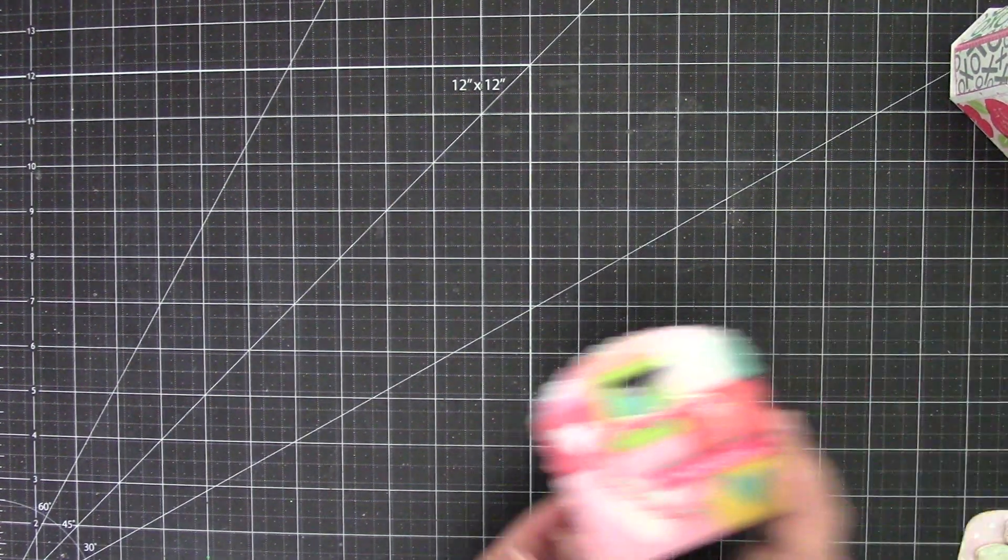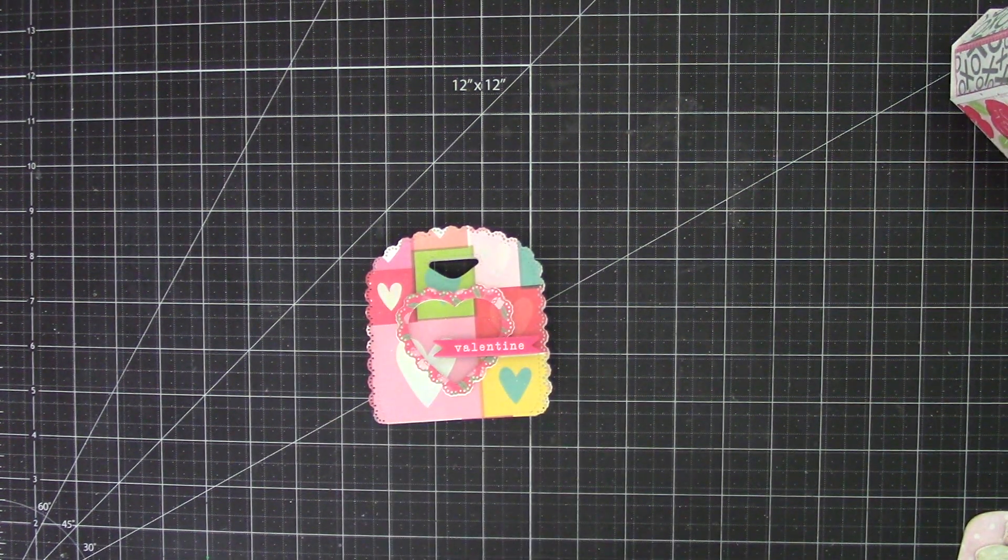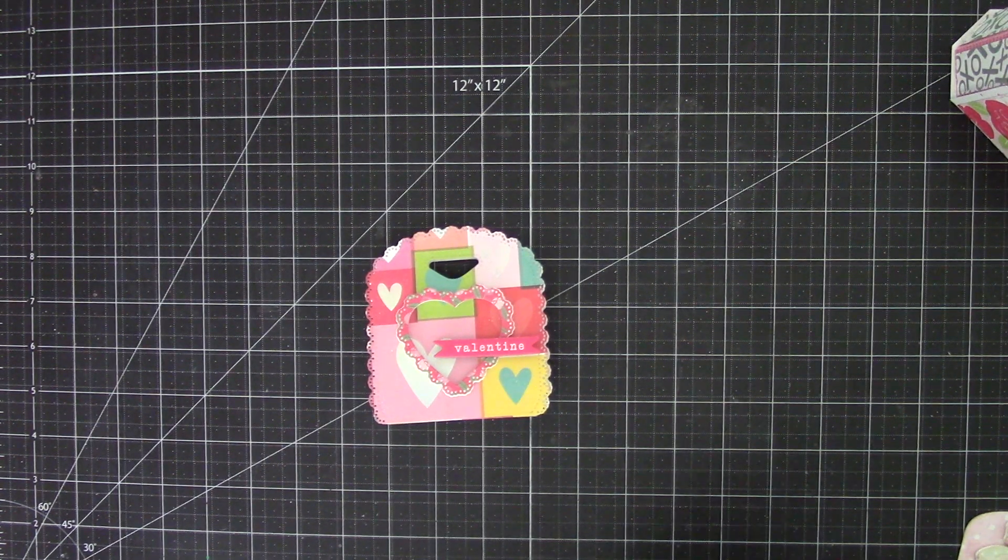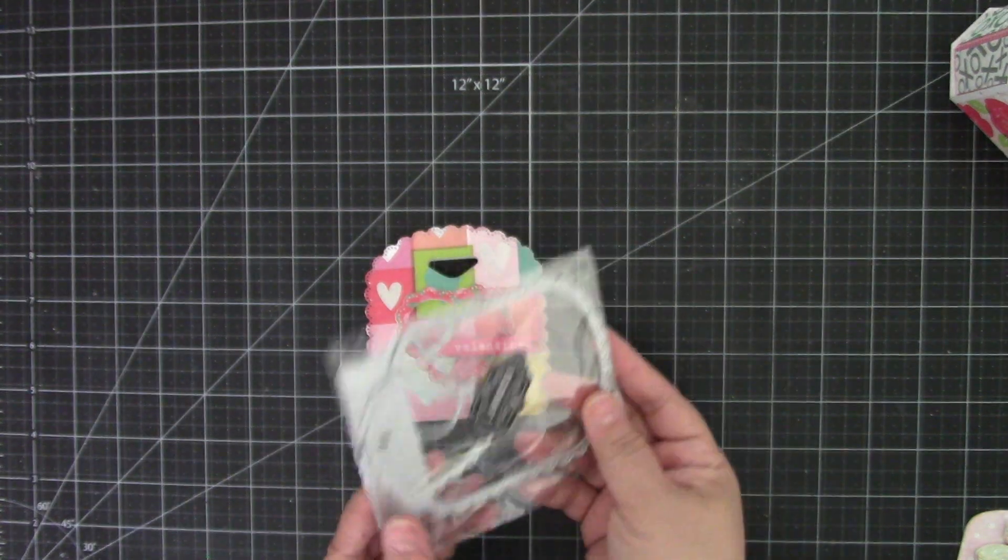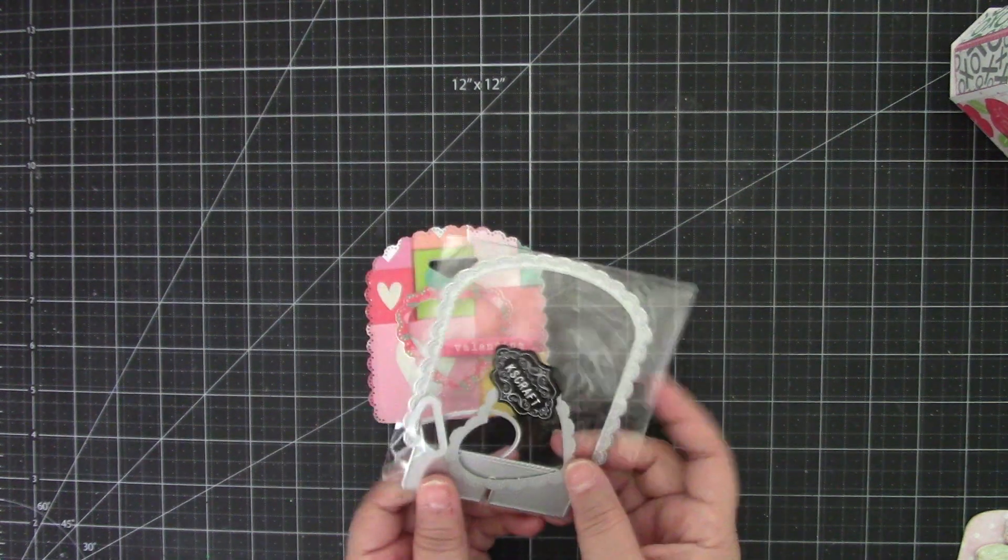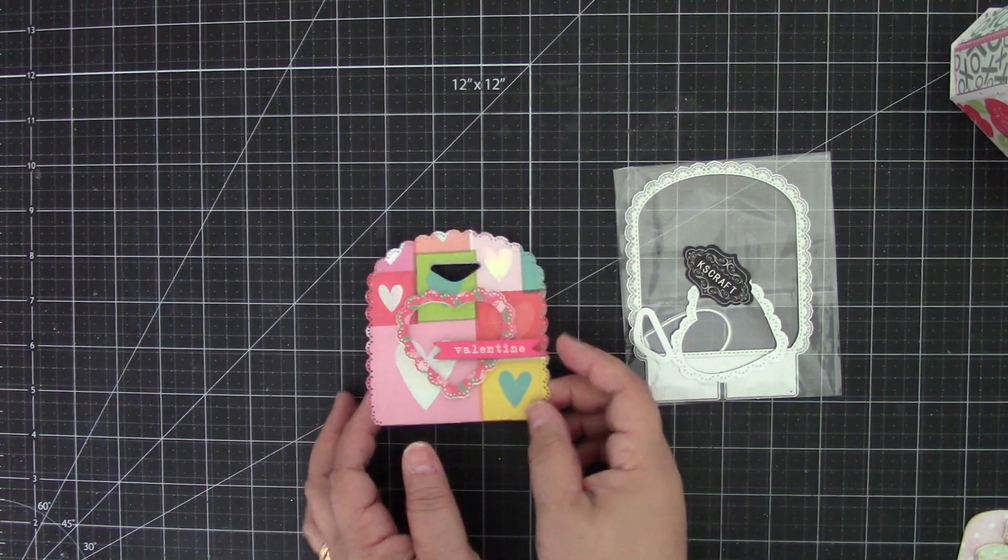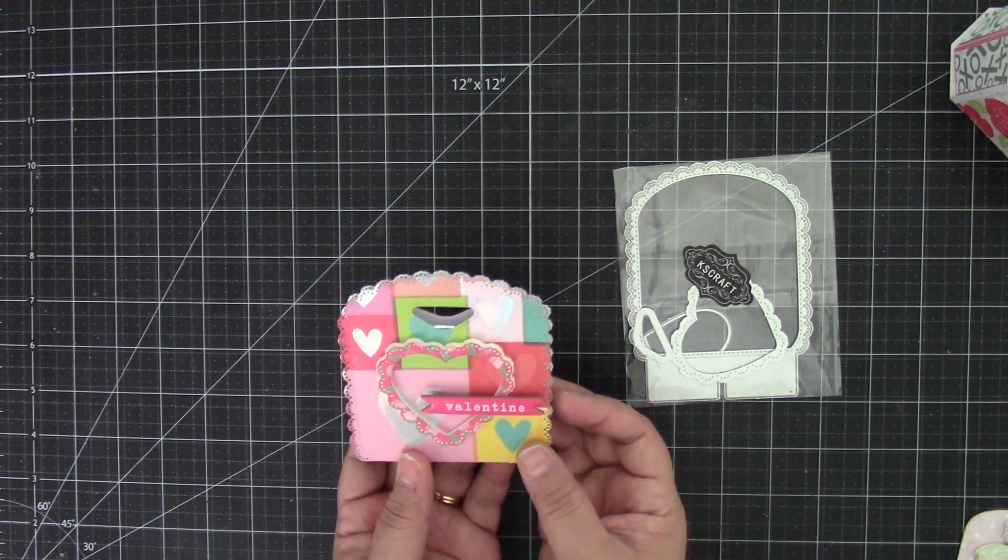The next one is this really fun bag die. And it is this die set right here. So it comes with a scallop bag. You get a heart. Two hearts. You can layer. And then this die that creates the hole here. And it makes a super cute bag.